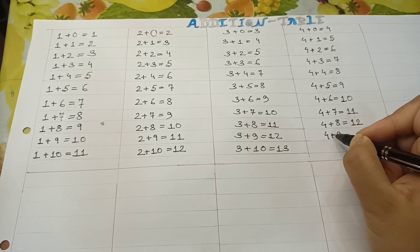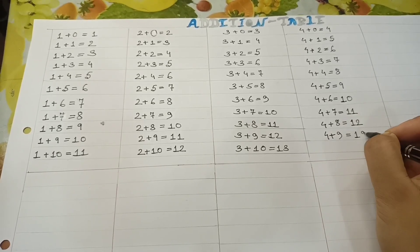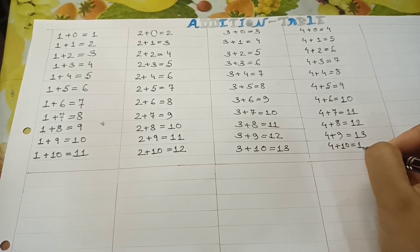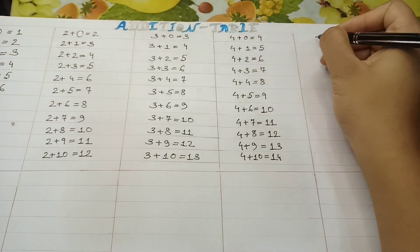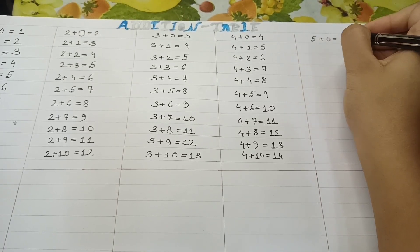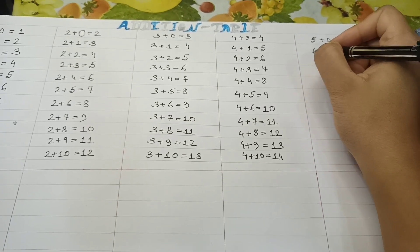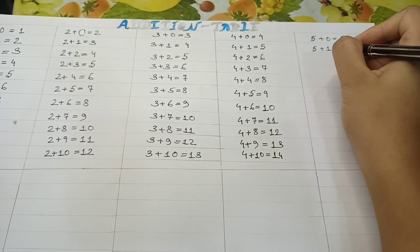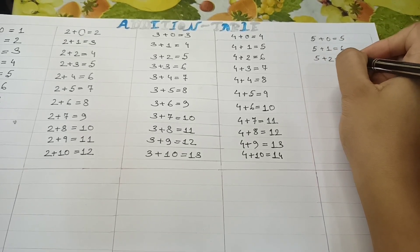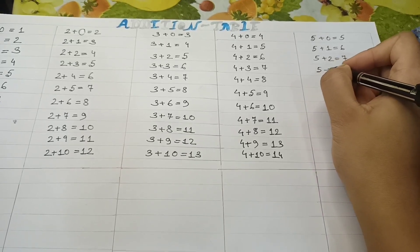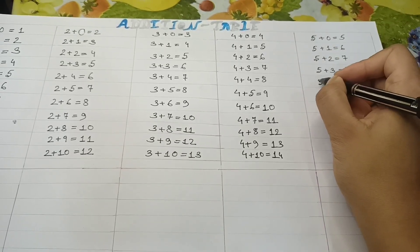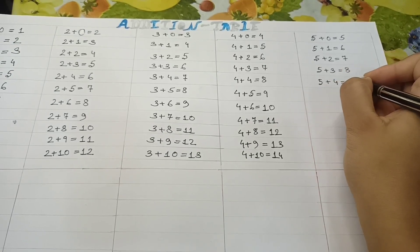4 plus 9 is equal to 13. 4 plus 10 is equal to 14. Next, 5 table. 5 plus 0 is equal to 5. 5 plus 1 equal to 6. 5 plus 2 is equal to 7. 5 plus 3 is equal to 8. 5 plus 4 is equal to 9.